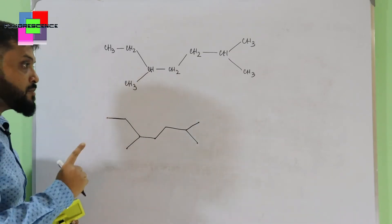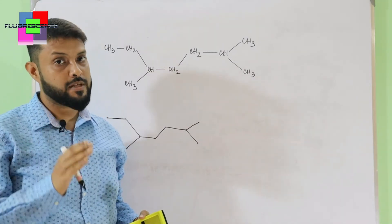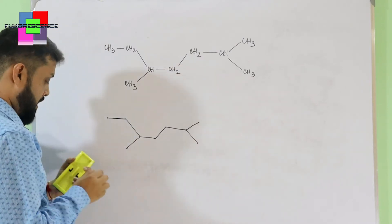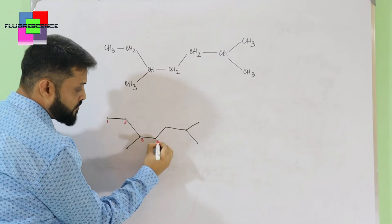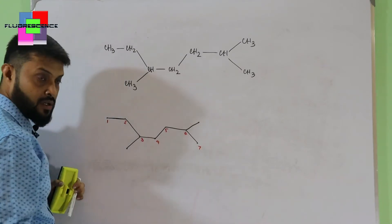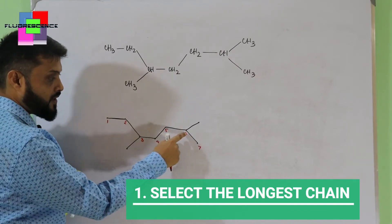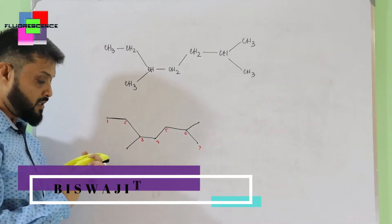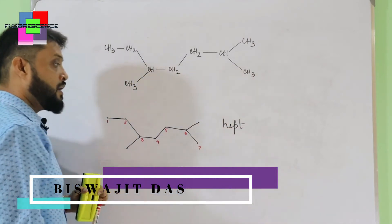The first procedure is to use the longest chain with the maximum number of substitutions — I repeat, longest chain with maximum number of substitutions. If I consider this chain: 1, 2, 3, 4, 5, 6 — after that you can switch to top or bottom. Starting from this end I get 7, so I will choose the longest one, which is 7 — that is 'hept'. Now we'll work on the substitutions.